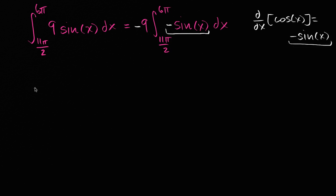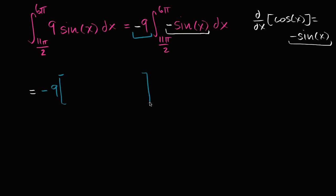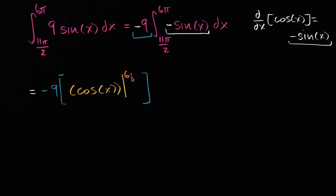So this is all going to be equal to negative nine times the antiderivative of negative sin(x), which is just cos(x). We evaluate it at its bounds: at six π and at eleven π over two.